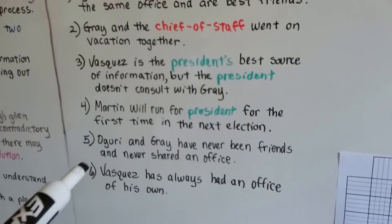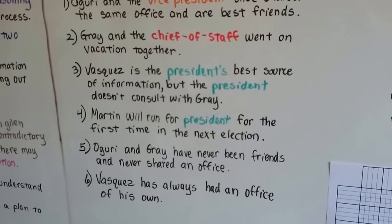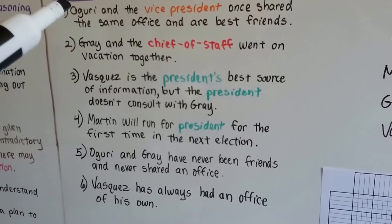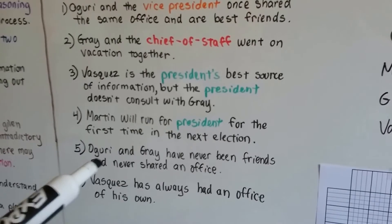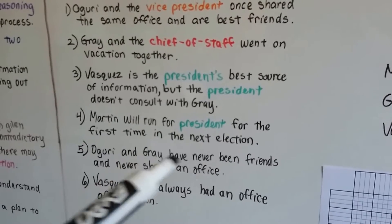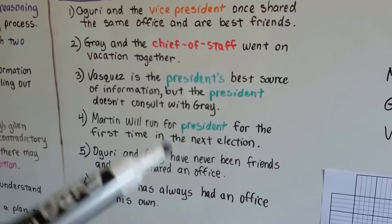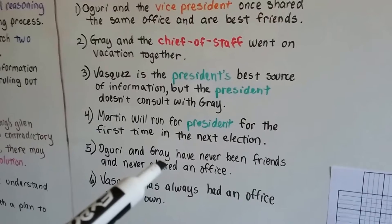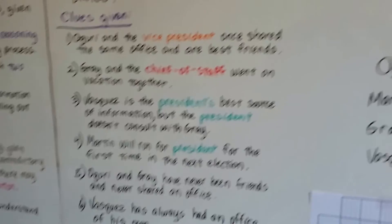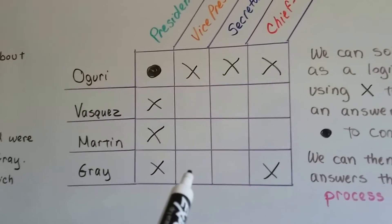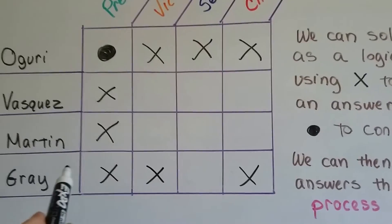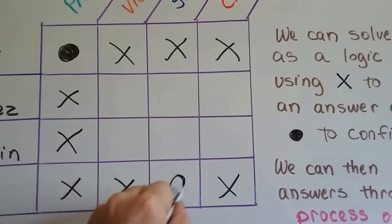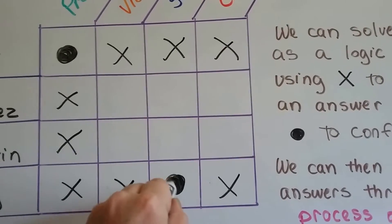The next bit of information says Oguri and Gray have never been friends and never shared an office. But Oguri shared an office with the Vice President. So Gray cannot be the Vice President because they haven't been friends and didn't share an office. We put an X for Gray under Vice President. Through process of elimination, the only box that's open for Gray is Secretary General — he's got to be the Secretary General because he has no other choices.